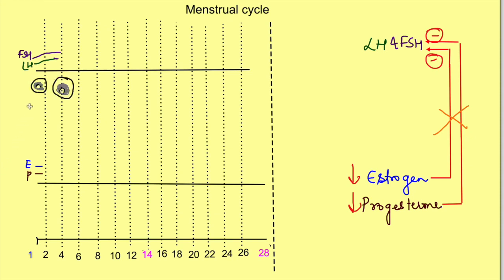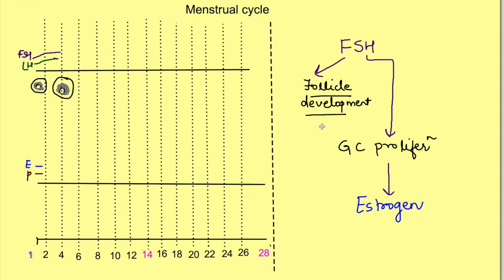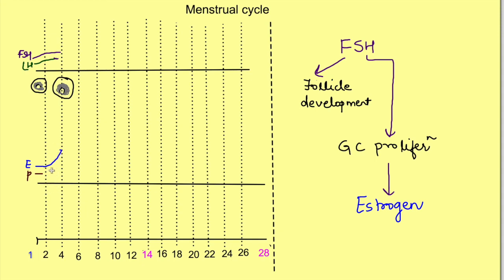The rise in FSH leads to development of the follicles — FSH stands for follicle stimulating hormone. It causes follicle development and also the proliferation of the granulosa cells, which are the cells that surround the ovum. FSH causes proliferation of these granulosa cells, and it is from these granulosa cells that estrogen is released. So increased FSH causes granulosa cell proliferation and follicular development with the release of estrogen.